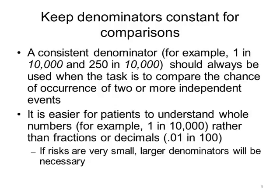A third strategy for communicating health risk is to keep denominators constant for comparisons. It is difficult for patients to compare across treatments when different denominators are used. Therefore, a consistent denominator, such as 1 in 10,000 and 250 in 10,000, should always be used when the task is to compare the chance of occurrence of two or more independent events. Also, it is easier for patients to understand whole numbers, such as 1 in 10,000, rather than fractions or decimals, like 0.01 in 100. Thus, if risks are very small, larger denominators will be necessary.